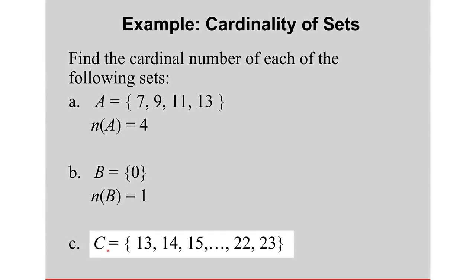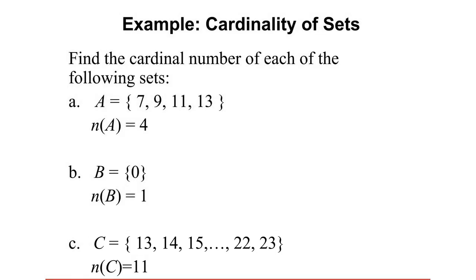For the third example, you have C equal to {13, 14, 15, ..., 22, 23}. How many distinct elements are in this set? Starting from 13, you end at 23 — these are natural numbers from 13 to 23 inclusive, including both endpoints. There are 11 numbers, so N of C is equal to 11.